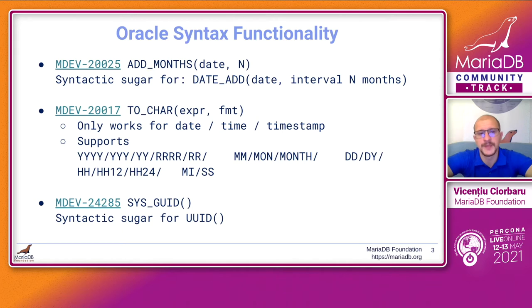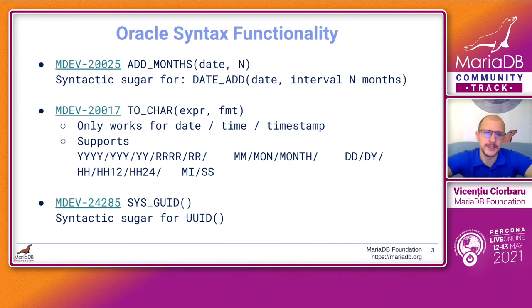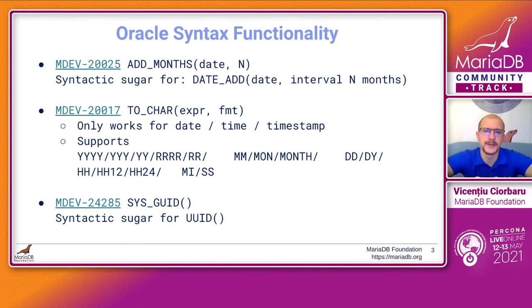We also have syntactic sugar for SYS_GUID, the global unique identifier. The difference is that MariaDB's UUID function has dashes according to the standard specification for UUIDs, whilst Oracle's does not. So SYS_GUID is syntactic sugar, however do note that Oracle has additional functionality not present in MariaDB. For example, for a particular session, the SYS_GUID will have incremental identifiers — a specific character in the ID is incremented by one — and this is not the case for MariaDB's implementation.